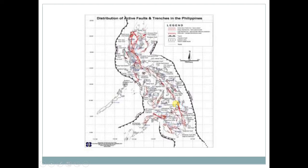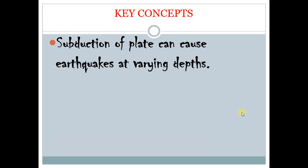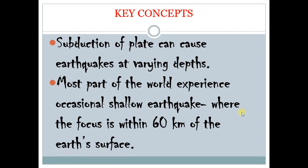We have a lot of active volcanoes and we experience earthquakes every now and then. That explains why the country has a lot of volcanic activities, active volcanoes, and earthquakes. Subduction of the plate can cause earthquakes at varying depths, and that's why most parts of the world experience occasional shallow earthquakes where the focus is within 60 kilometers of the Earth's surface. If you visit a website that tracks earthquakes, you would find shallow earthquakes, deep earthquakes, and earthquakes of different varying depths, all because of the subduction of plates happening at convergent plate boundaries.